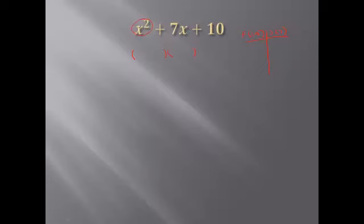The x squared splits into x times x in the first position of each parenthesis. The factors of ten go in the last position, but they must be the correct pair that adds up to seven. Pairs of factors of ten: one times ten adds to eleven; two times five adds to seven — that's the correct pair.